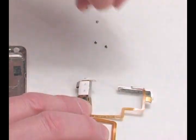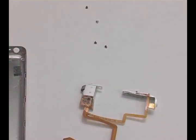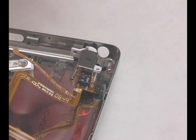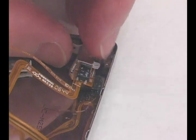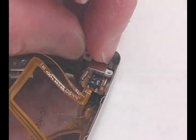Put the spacer onto the new headphone jack. Put the new headphone jack assembly into the back plate and replace all four screws.